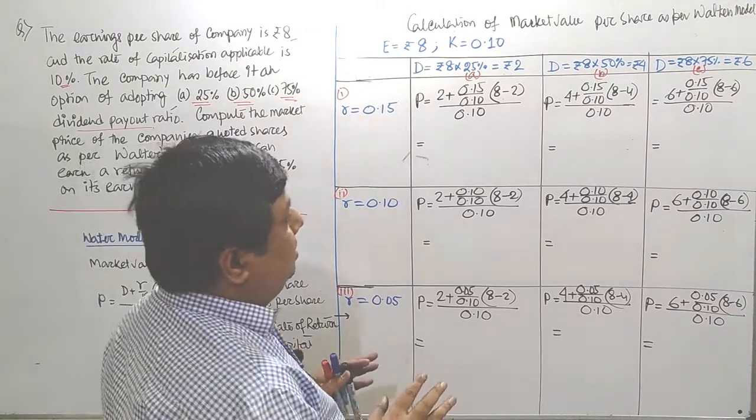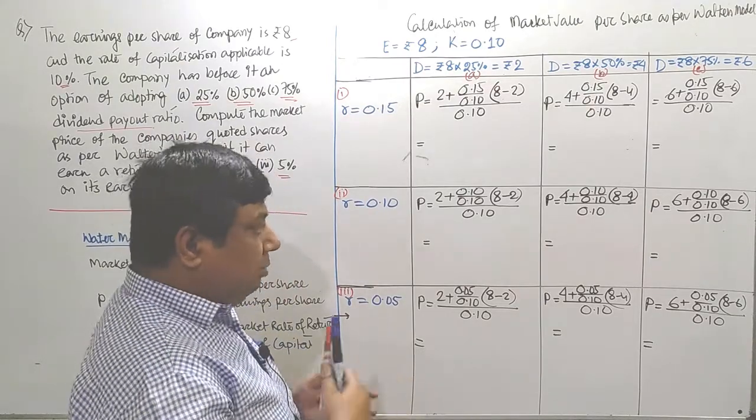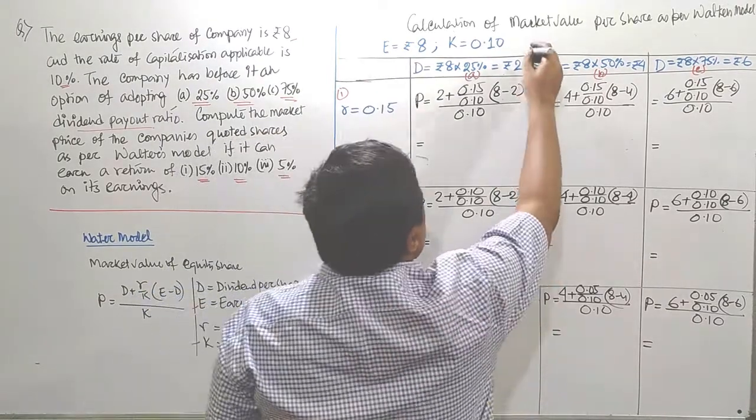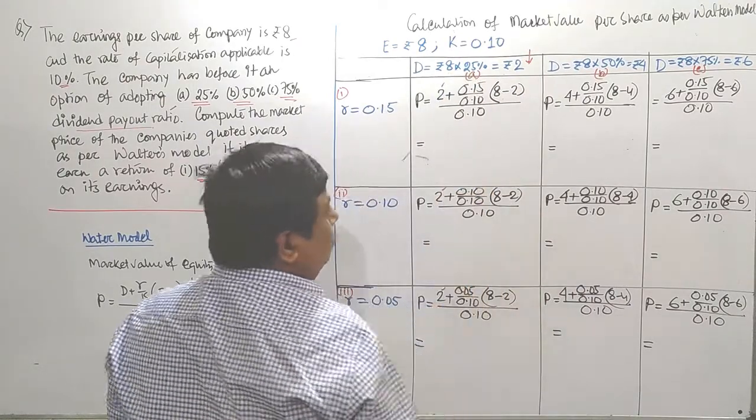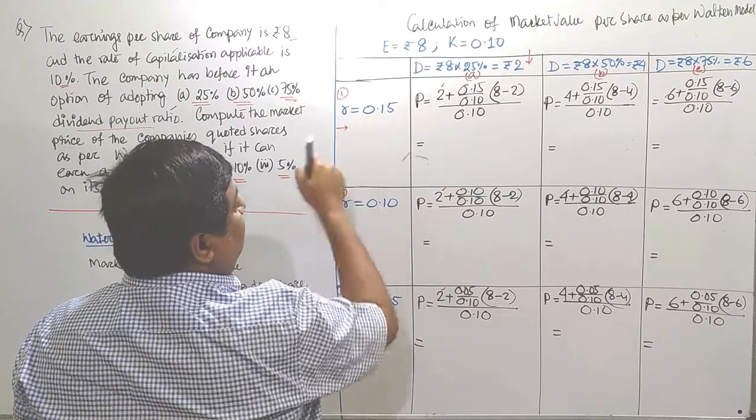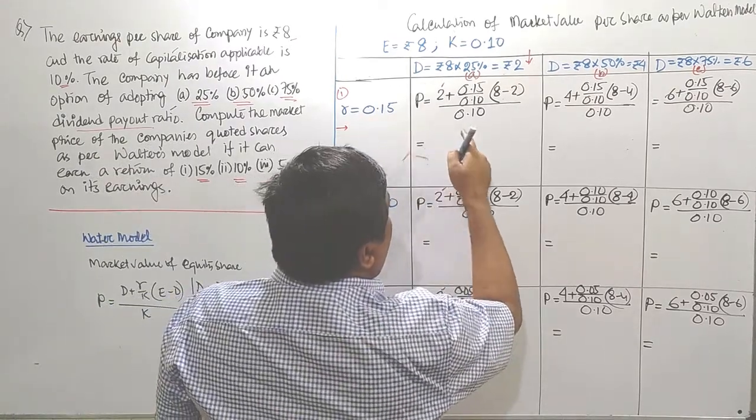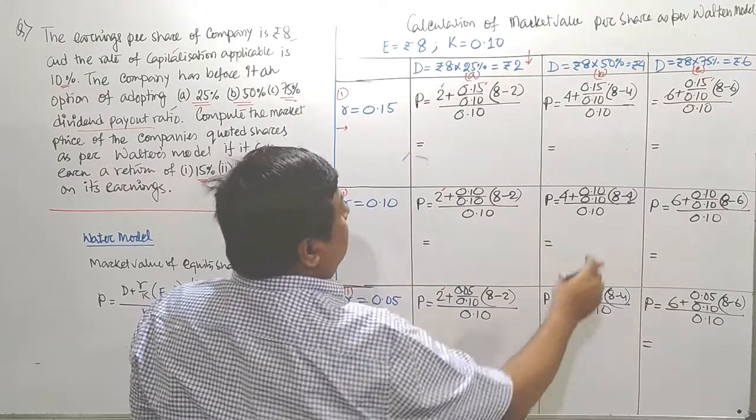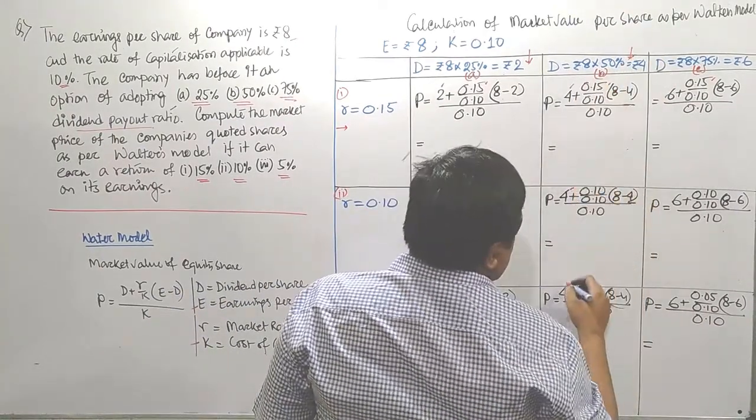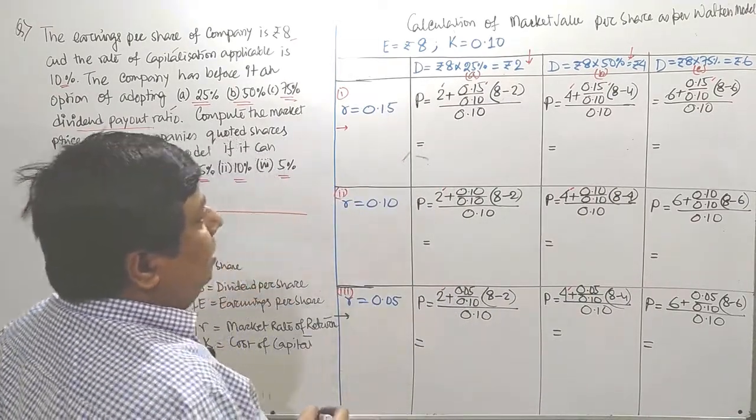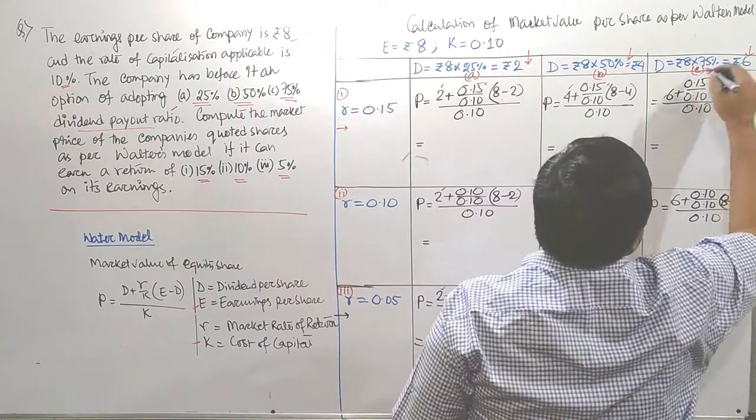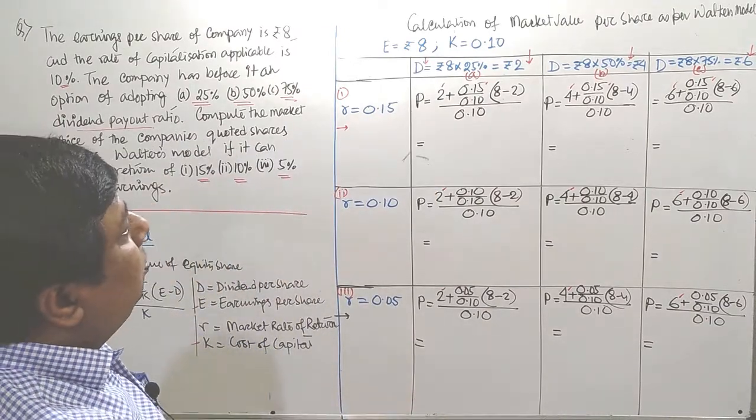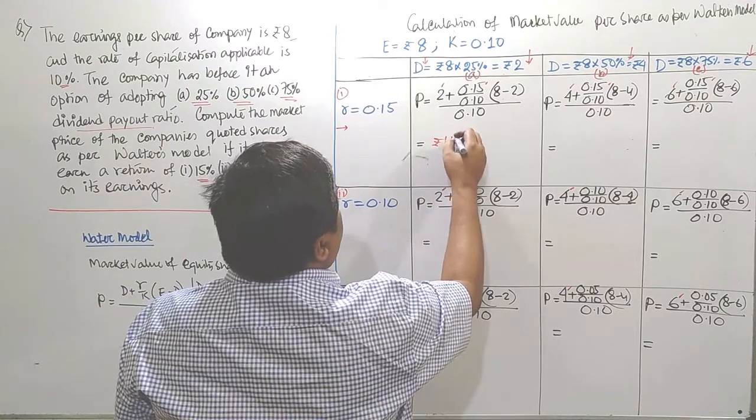Before calculation, let me recap the concept. If you look at the columnar form, in every column, D remains as D. Similarly, if you follow row-wise, in the first case, in every box, your R is 0.15. If you follow the second column, our D is 4. In every case, our D is considered as 4. In third column, our D is 6. If we plot the answer, the first answer you got would be Rs 110.